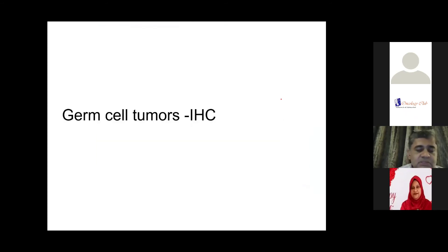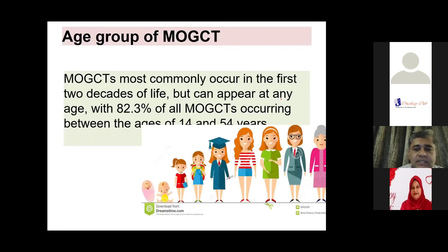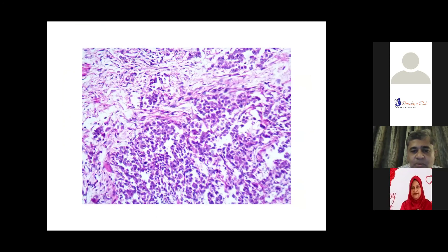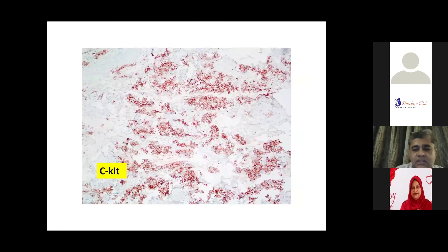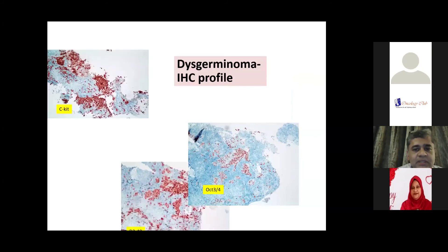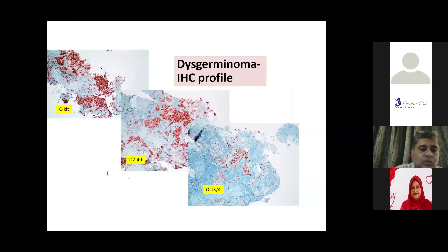Last but not least, germ cell tumors — a small category, about 15% of ovarian tumors. They mostly occur in the age group of 14 to 54, predominantly 14 to 40. The most common is dysgerminoma, classically seen and picked up by the pathologist. If you want to use immunohistochemistry, C-KIT is one marker that picks up dysgerminoma, along with D2-40 and OCT3/4. The other newer marker for germ cell tumors is SALL4.